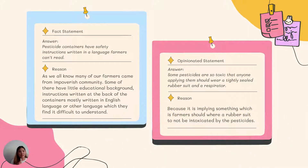The fact statement in the text: 'Pesticide containers have safety instructions written in a language farmers can't read.' The reason is that many farmers come from disadvantaged communities with little educational background, and instructions written on containers are mostly in English or another language which they cannot understand. For the opinionated statement: 'Some pesticides are so toxic that anyone applying them should wear a tightly sealed rubber suit and a respirator' — because it is implying something which a farmer should do to avoid being intoxicated by the pesticide.